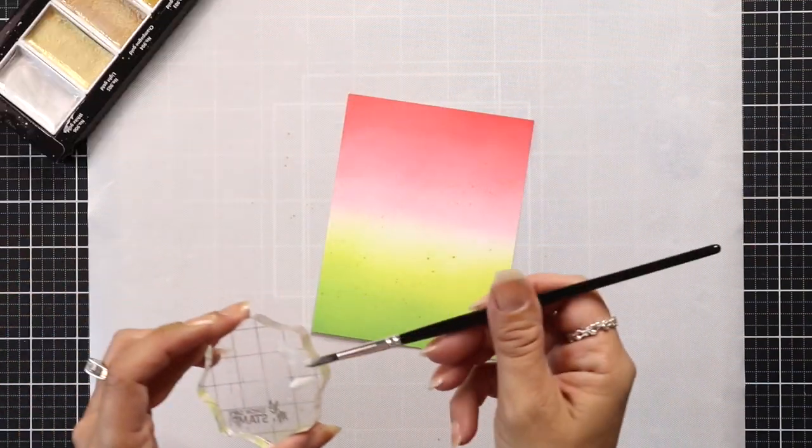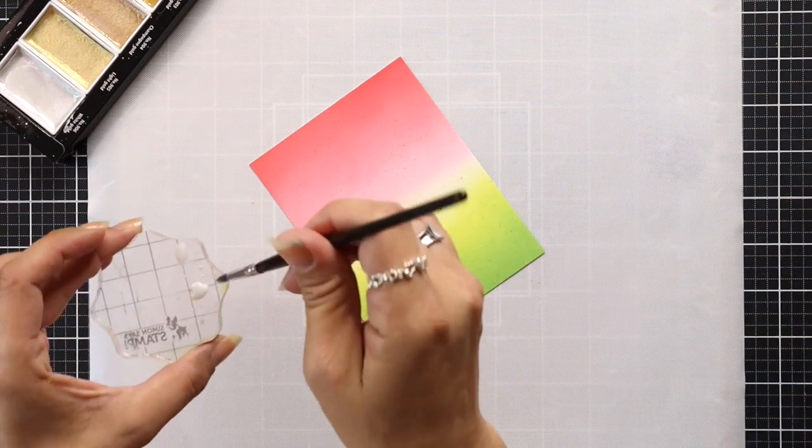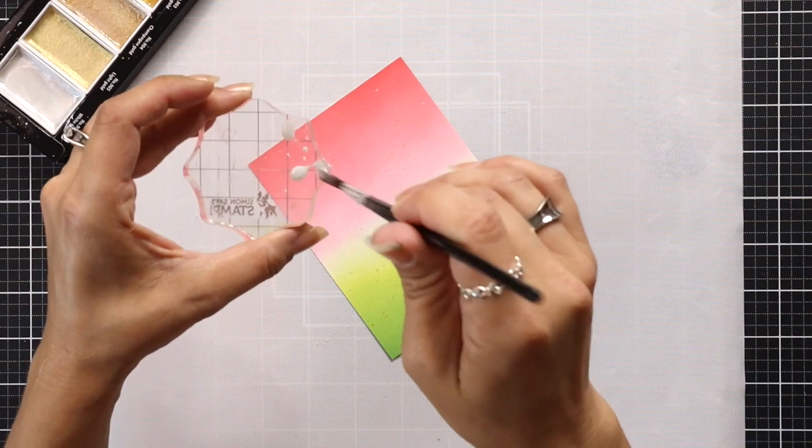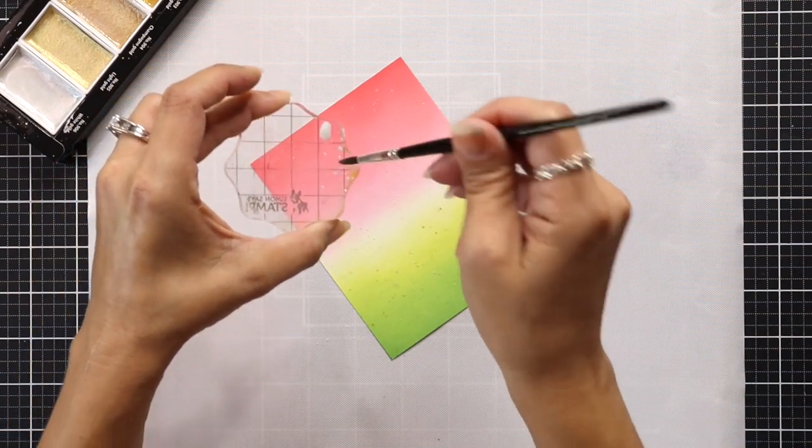So if you didn't want to do a shaker card, this would be a great way to do a background. So after I added the gold and the white, I'm going to set it off on the side to dry for a few minutes, or you can help it along with your heat tool.